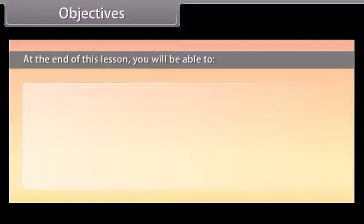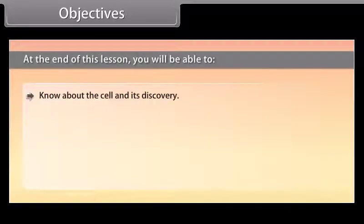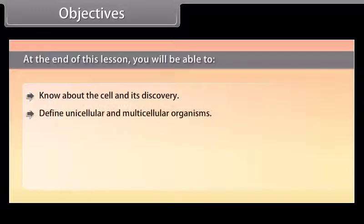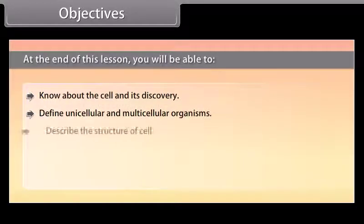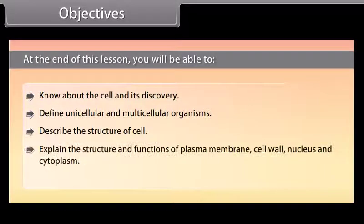Objectives: At the end of this lesson you'll be able to know about the cell and its discovery, define unicellular and multicellular organisms, describe the structure of the cell, and explain the structure and functions of plasma membrane, cell wall, nucleus, and cytoplasm.